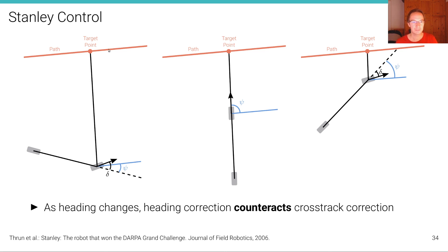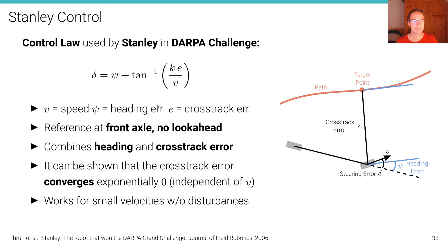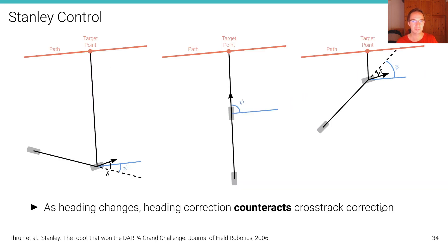Once we steer in that direction, we may reach a position facing almost directly toward the path. At this point, as the heading changes, the heading correction term counteracts the cross-track error correction. We still have a cross-track error telling us to steer left, but now we also have a strong heading error — shown by the blue angle psi here — telling us not to oversteer and to steer back. In this particular case, both terms balance out and the vehicle steers straight forward toward the target point.